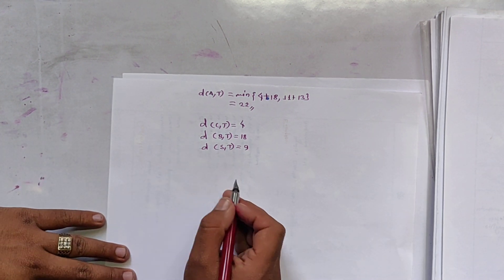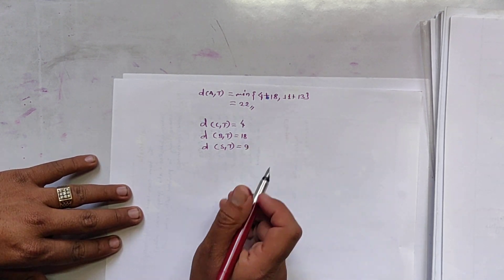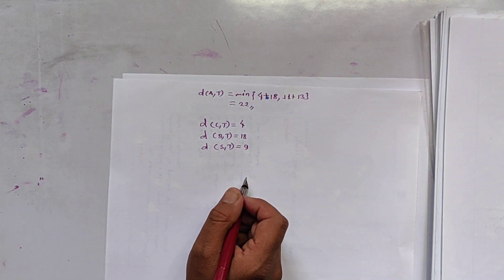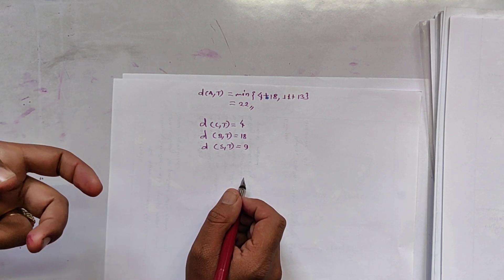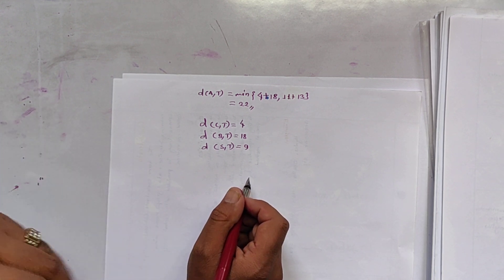These are the values we get by backward substitution of values. After finding DET, DDT, DFT, we get these values.